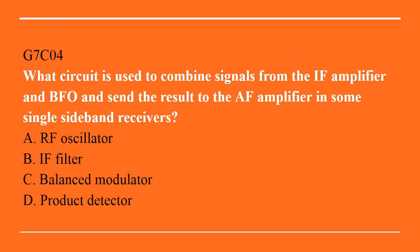G7C04: Which circuit is used to combine signals from the IF amplifier and BFO, and send the result to the AF amplifier in some single sideband receivers? A. RF oscillator. B. IF filter. C. Balanced modulator. D. Product detector. Answer is D. Product detector.